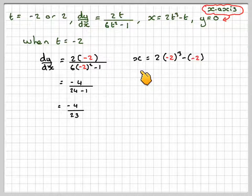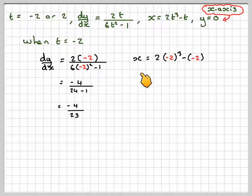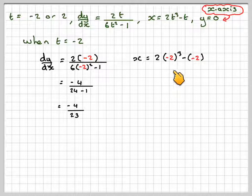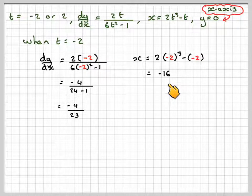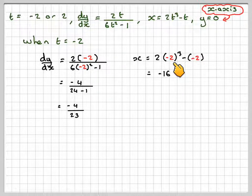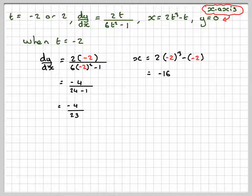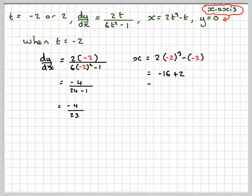To find the x-coordinate, we know y is 0, but when t is minus 2, x equals 2 times (minus 2) cubed minus minus 2. Be careful substituting the negative number. That's minus 16, because minus 2 cubed is minus 8 times 2. Minus minus 2 is plus 2, so that gives me minus 14.